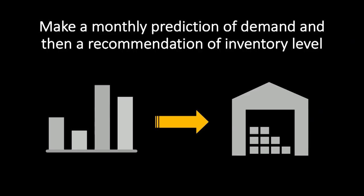In the example I'm going to present today, our goal was to reduce storage costs for maintenance parts for an industrial company. The method we used was first to make a monthly prediction of demand — where demand is the stock consumption for each piece — and then make a recommendation of inventory level.